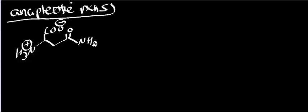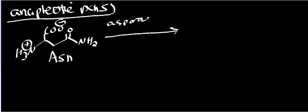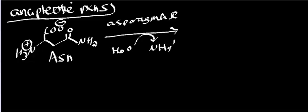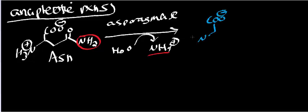What I'm drawing here is asparagine — this is ASN. It turns out that there's an enzyme called asparaginase, and essentially what asparaginase does is it uses water and hydrolyzes off ammonia. So the ammonia is essentially this group here, and what you end up with is aspartate. Here's the alpha carbon, and here is aspartate.